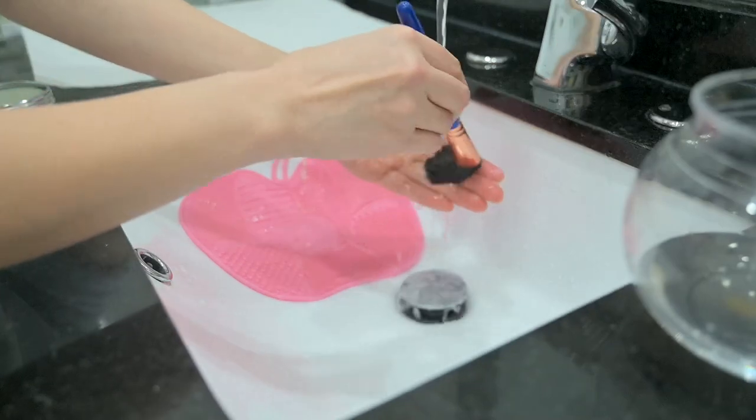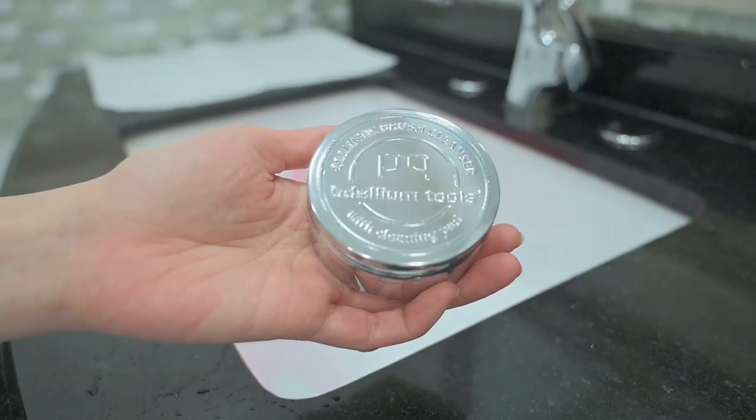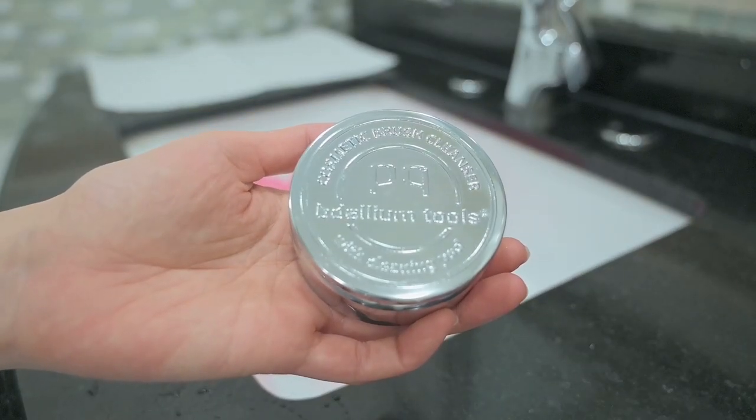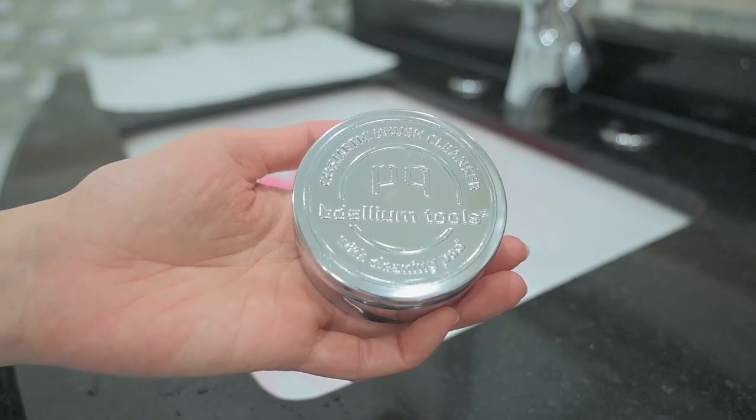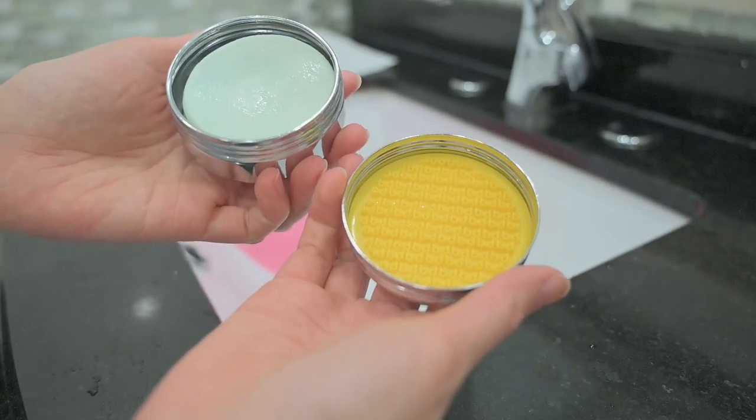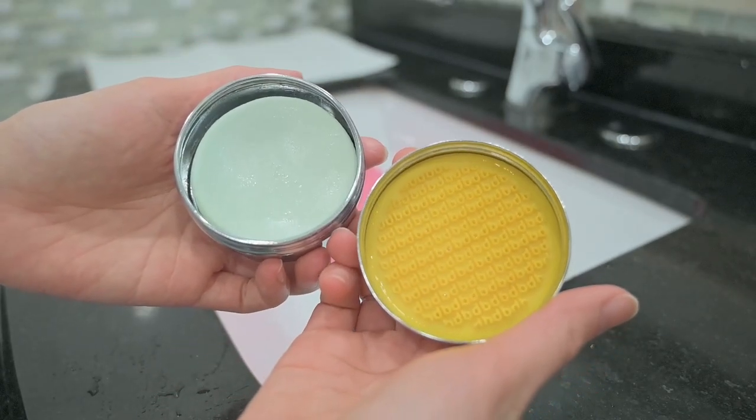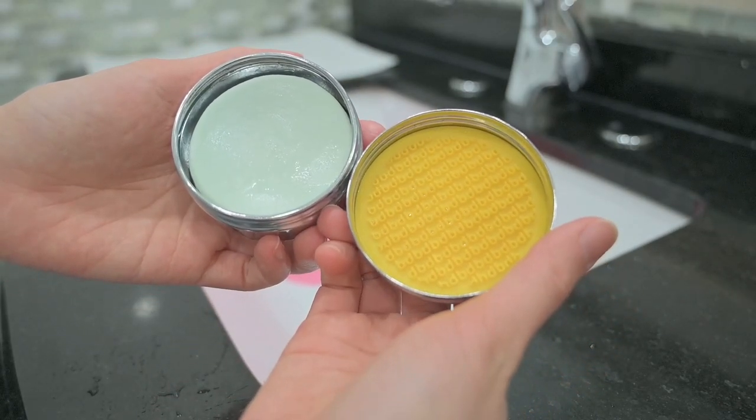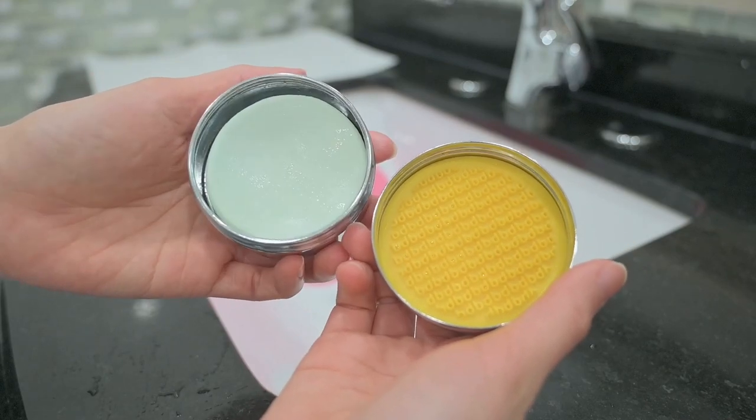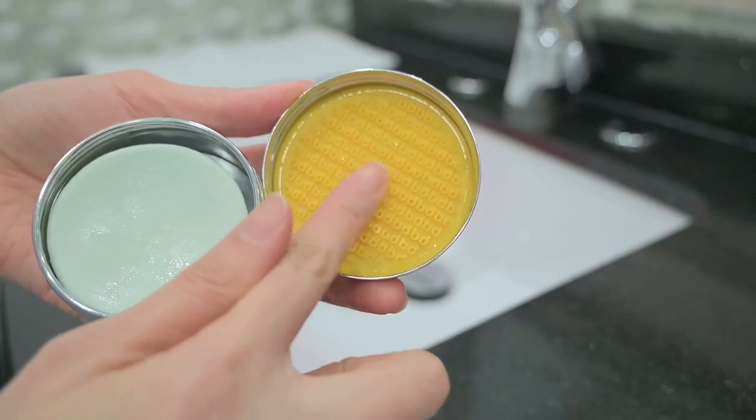The cleanser I use today is from Dellum Tools. It's a solid soap and it comes with a silicone cleaning pad in the cap which is convenient for traveling or if you don't want to buy a separate cleaning mat. There are liquid cleansers on the market but I prefer solids as they tend to last longer and require less product per use.